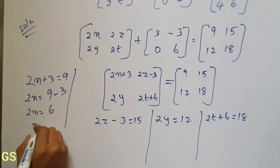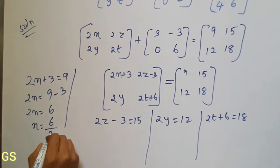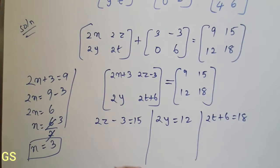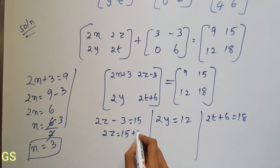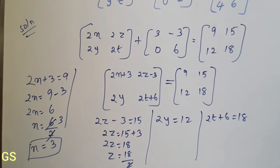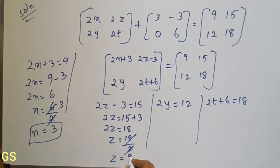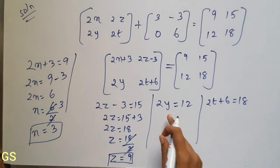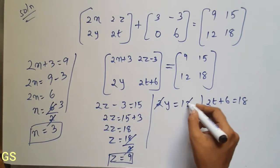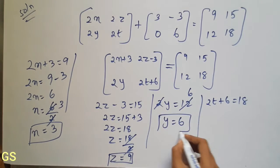2x is equal to 9 minus 3, which is 6. So x is equal to 3. For z: 2z is equal to 15 plus 3, which is 18. 18 divided by 2 — cancel — so z is equal to 9. For y: 2y is equal to 12, cancel, y is equal to 6.